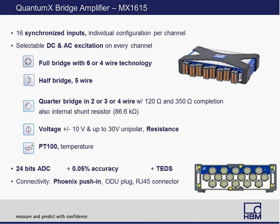Aside from voltage measurement — which can be unipolar up to 30V or bipolar ±10V — you can also measure resistance in four-wire mode as well as temperature. As with any QuantumX module, it supports 24-bit resolution on the ADC and 0.05% accuracy class. If you have a TEDS-compatible sensor, you can plug it directly into the module and start acquiring data. Connectivity-wise, it comes by default with a push-in type connector, but we also have ruggedized versions such as the M12 plug connector as well as RJ45.